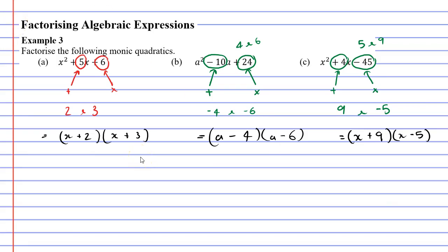Before we conclude, it's important to note that this technique will always work for monic quadratics — quadratics that have no number to the left of x squared or a squared, meaning there's technically a 1 there. But if you get a quadratic that's not monic, such as one with a 2 in front of the x squared, then this technique does not work. That concludes our video on example 3. Remember to read the description below for links to workbooks that relate to this video.